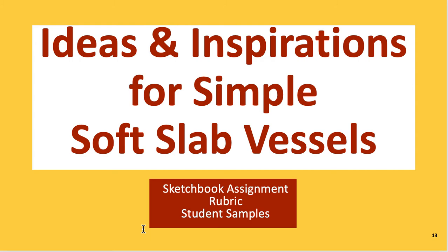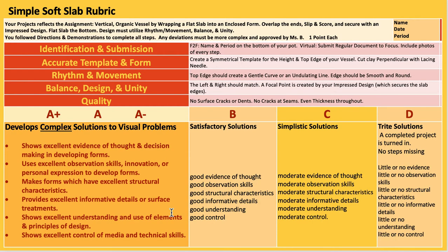Ideas and inspirations for simple soft slab vessels — the sketchbook assignment, rubric, and student samples are here. For the rubric: your name, an accurate symmetrical template for the height and top edge of your vessel, and cutting clay perpendicular with a lacing needle. Rhythm and movement — the top edge should create a gentle curve or undulating line; edges should be smooth and round. Balance, design, and unity — left and right should match; a focal point is created by the impressed design that secures the edges. Quality: no cracks or dents, no cracks at seams, even thickness throughout.